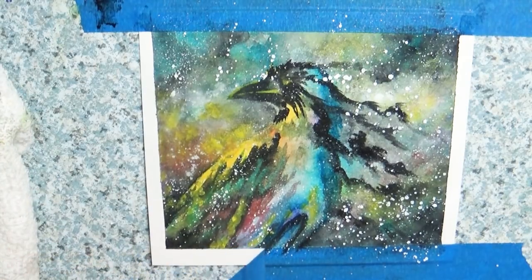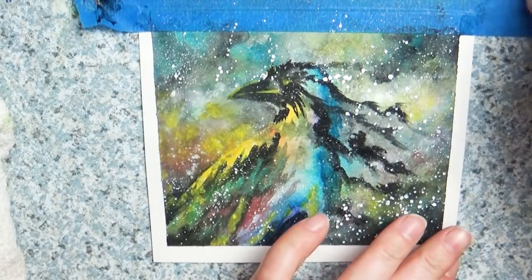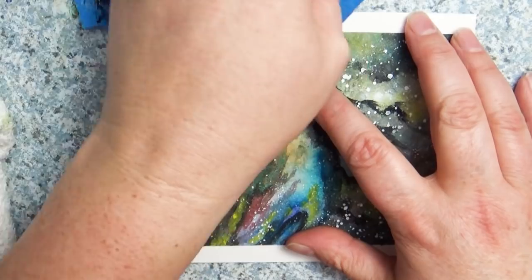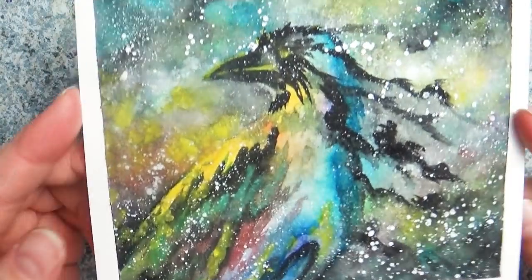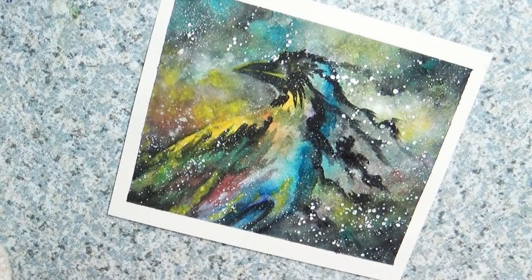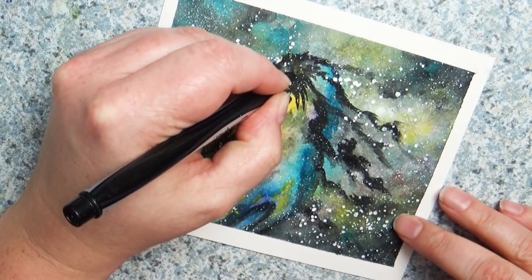The first couple taps is when you're probably going to get your biggest spots and then as you continue to tap, as the paint has lessened in that paintbrush, you'll get your finer misty kind of speckles. At this point I'm pretty much done with the heavy watercolor part. I'm going to go ahead and remove the tape so that I can see the piece and I just love how it looks when you have that really nice white border edge.